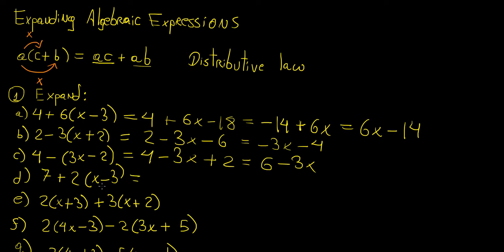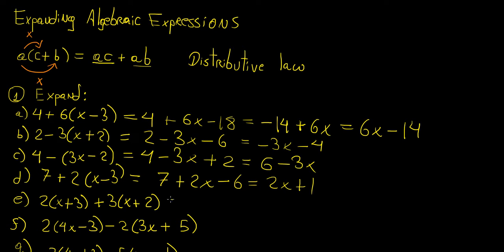Here we're going to have 7 plus 2x, and then minus 3 times 2, which is minus 6. So this becomes 2x plus 1, or 1 plus 2x — whichever way you want to write it. Generally we write the pronumerals at the front, so we're going to leave it as that.